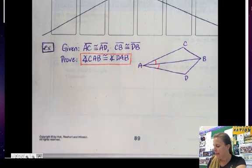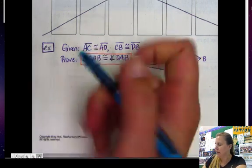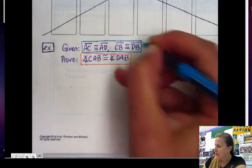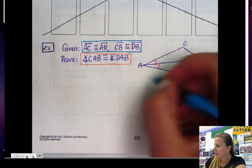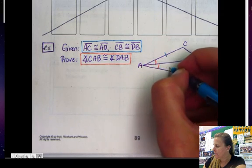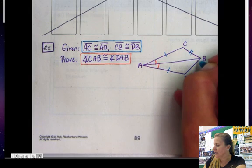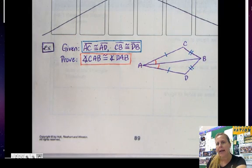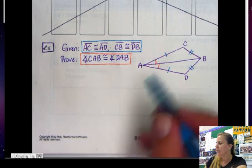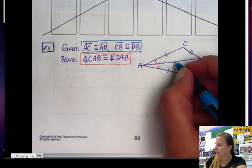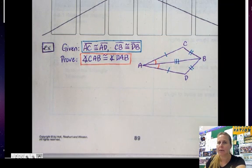That's what I want to prove. I am given, so here's my other color, this information here, which is AC is congruent to AD, and also CB is congruent to DB. And now I'm going to look at the picture, and I'm going to see that the two triangles share AB. So they share AB in the middle there.